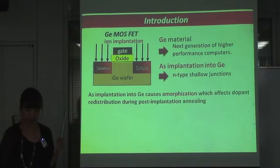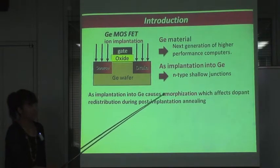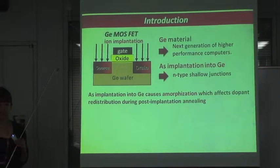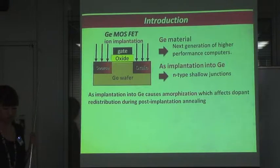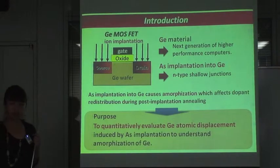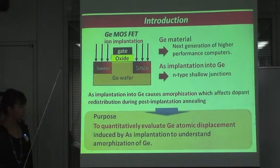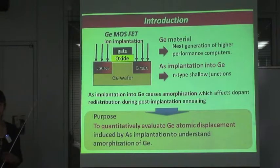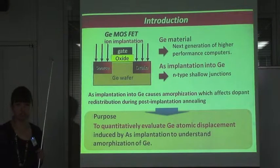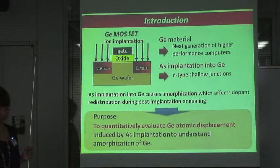However, arsenic implantation into Germanium causes amorphization, which affects the dopant redistribution during post-implantation annealing to activate the implanted dopants. So the purpose of our study is to quantitatively evaluate Germanium atomic displacement induced by arsenic implantation to understand amorphization of Germanium.